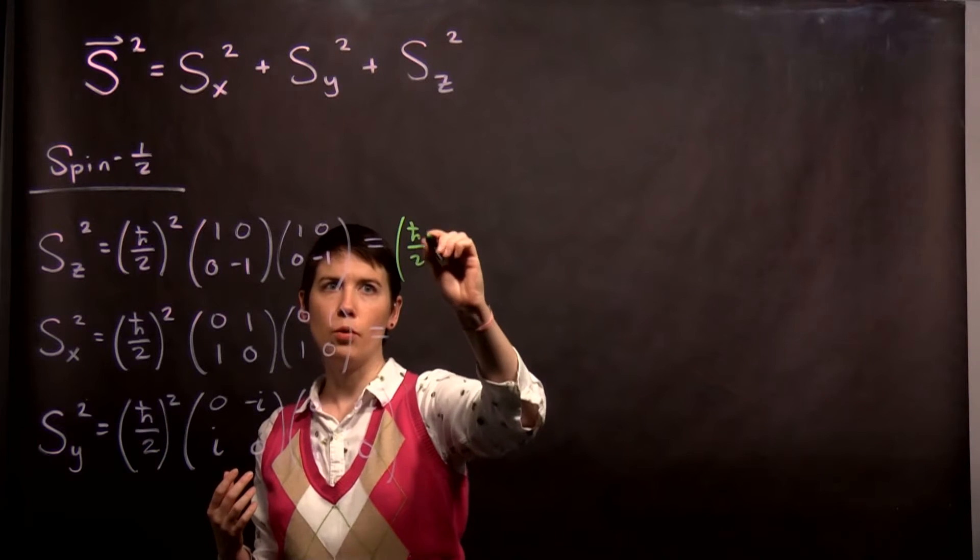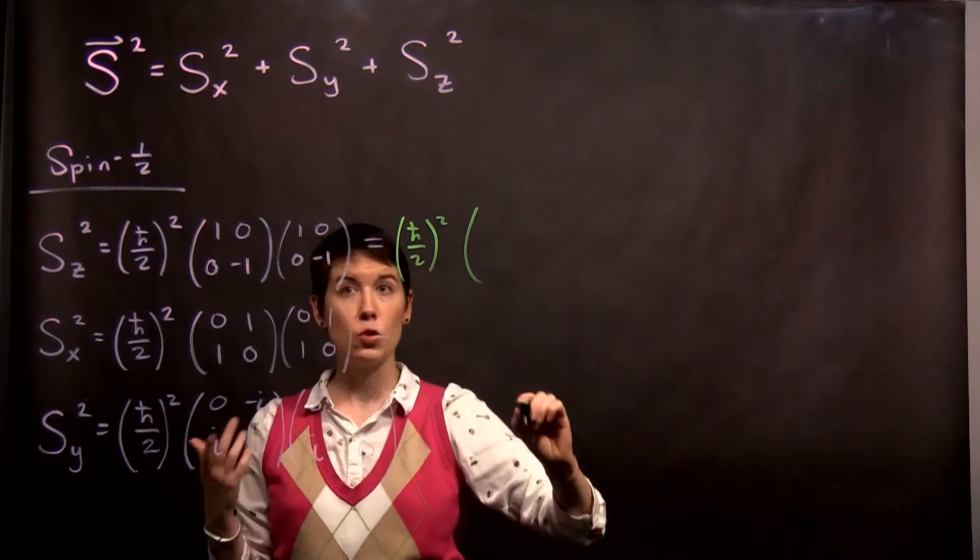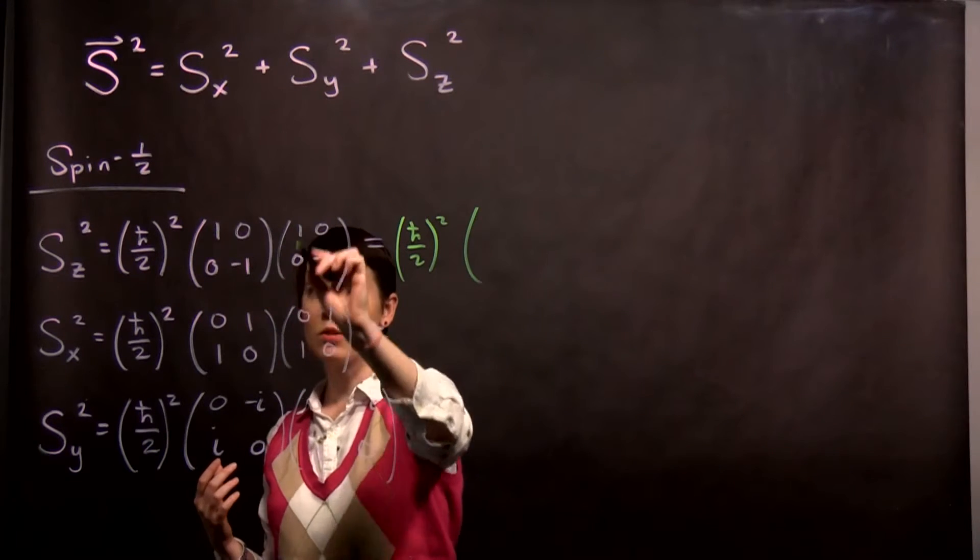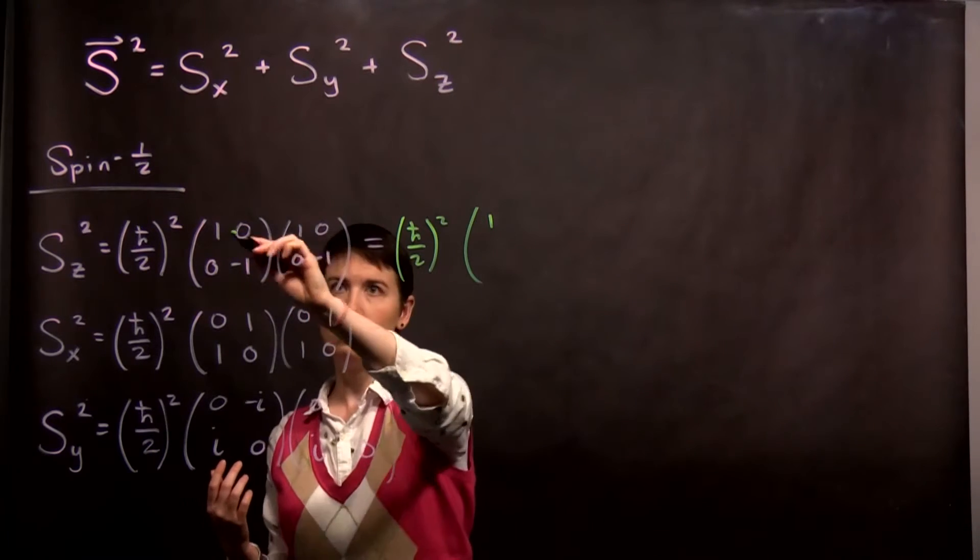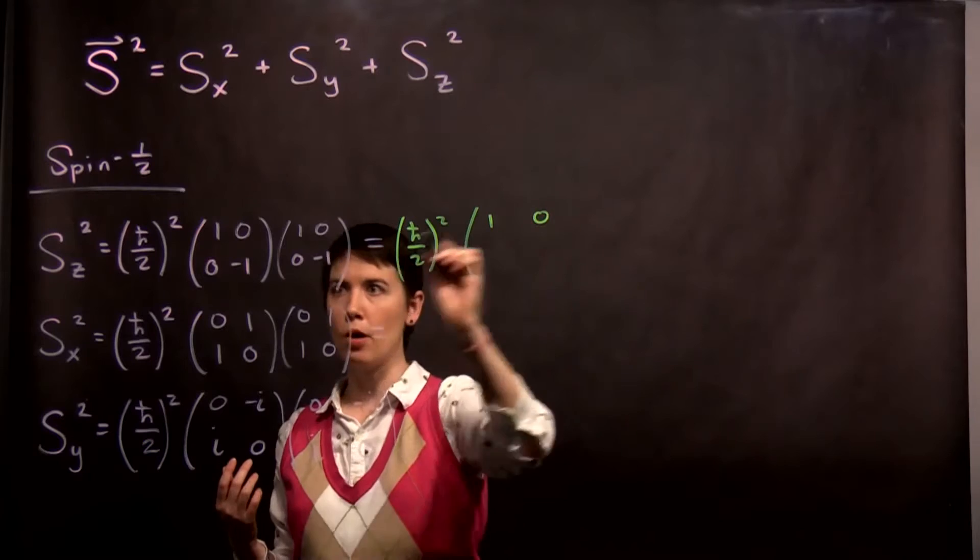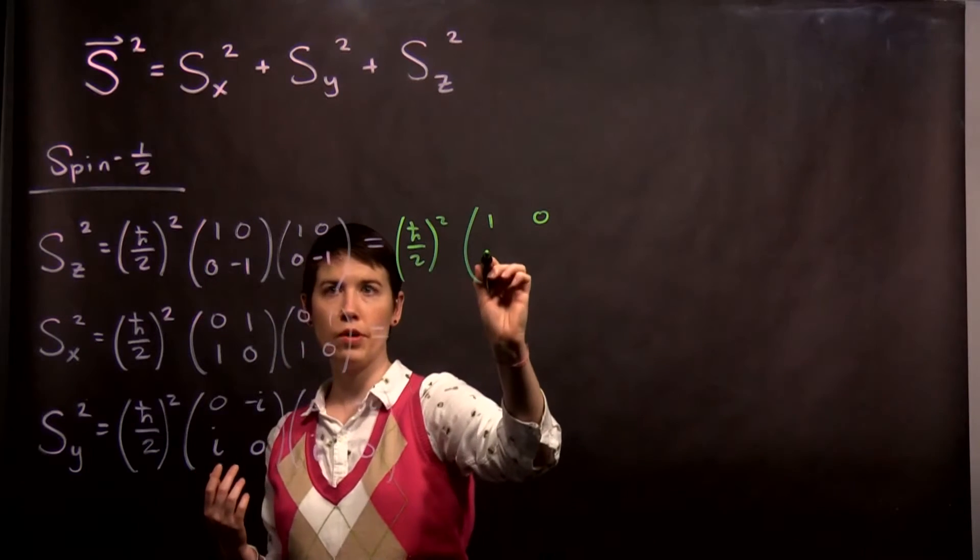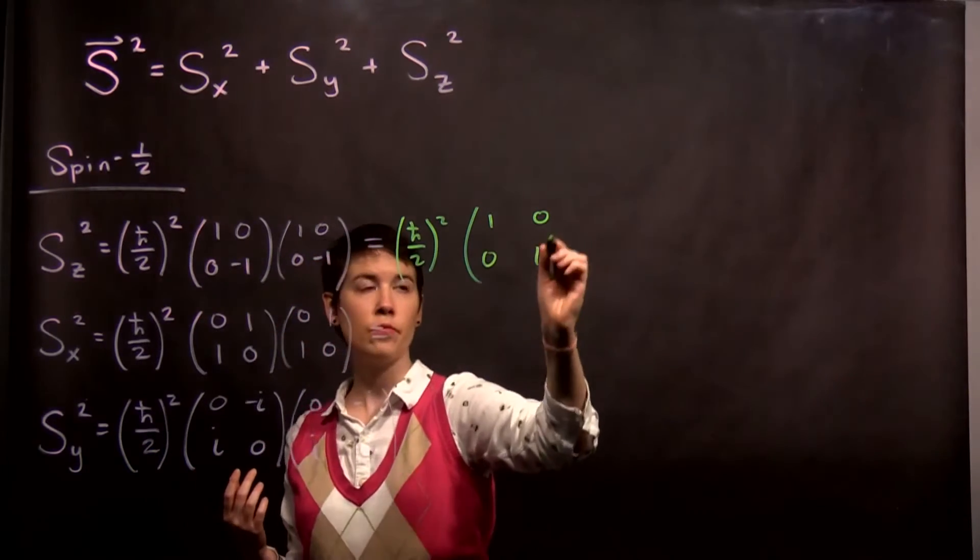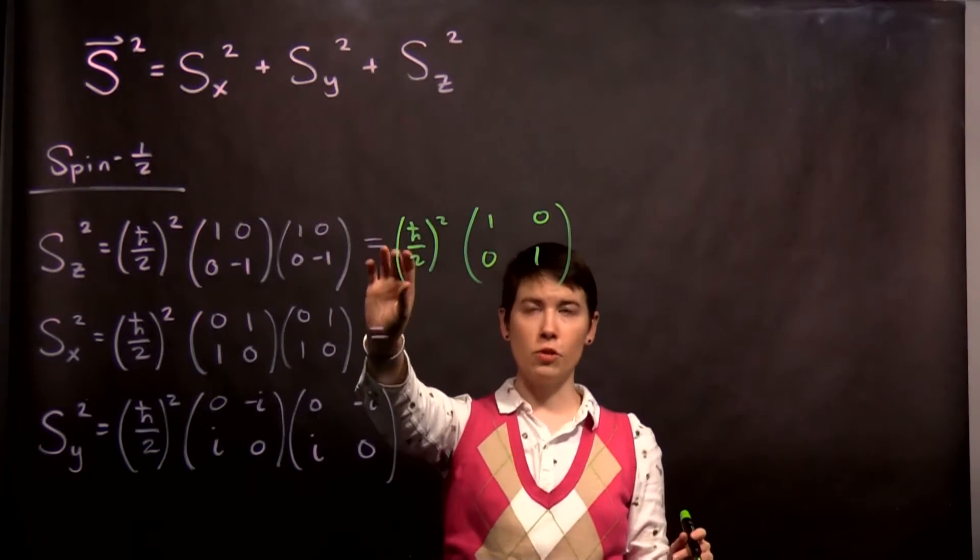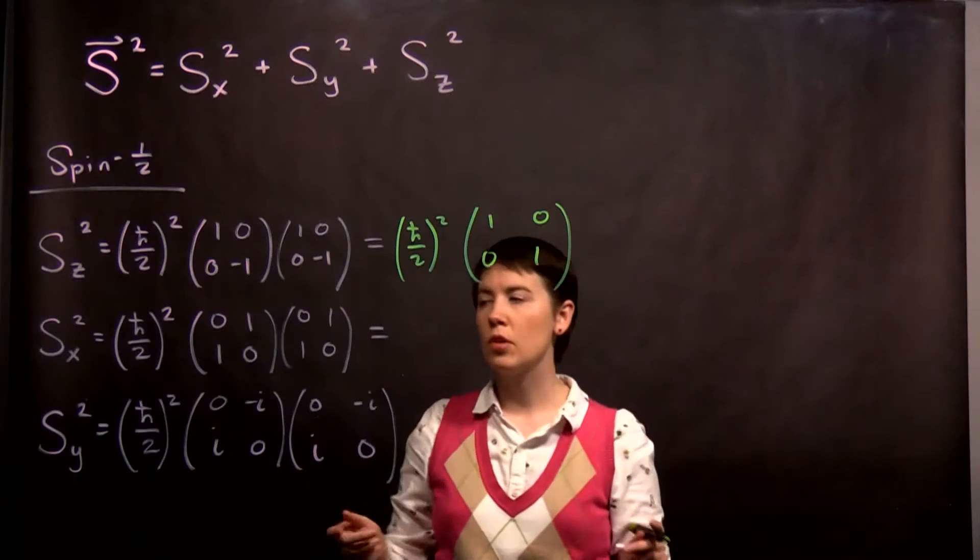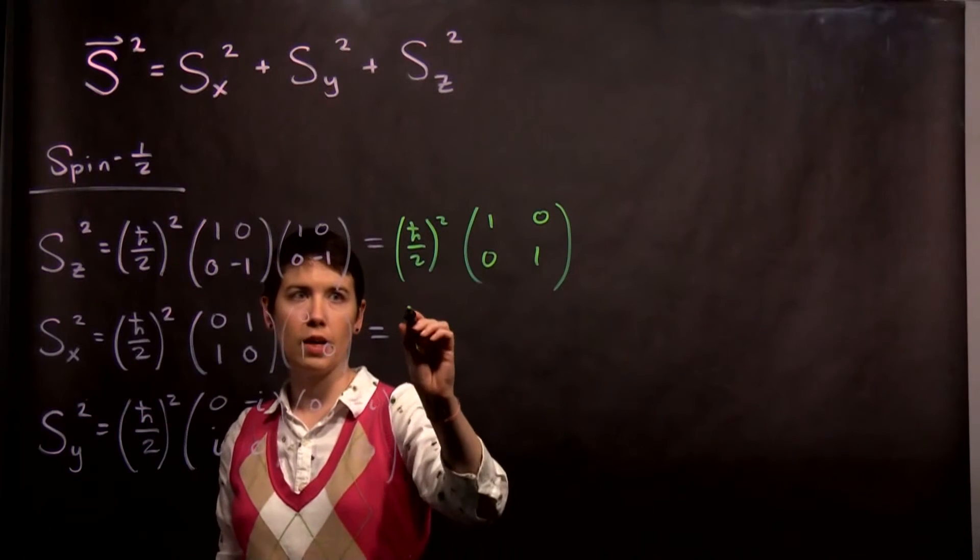So we have our coefficient out front, and now we're going to have a two-by-two matrix. So row times column, one times one is one, zero. One column, one zero, zero, one, zero. Row column, zero. Row column, negative one times negative one is one. So this is interesting. We've actually gotten a coefficient times the identity matrix.